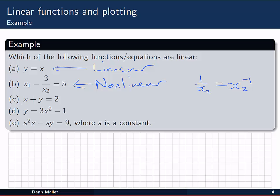In C, we have a constant multiple of x plus a constant multiple of y equal to 2. That one's linear.